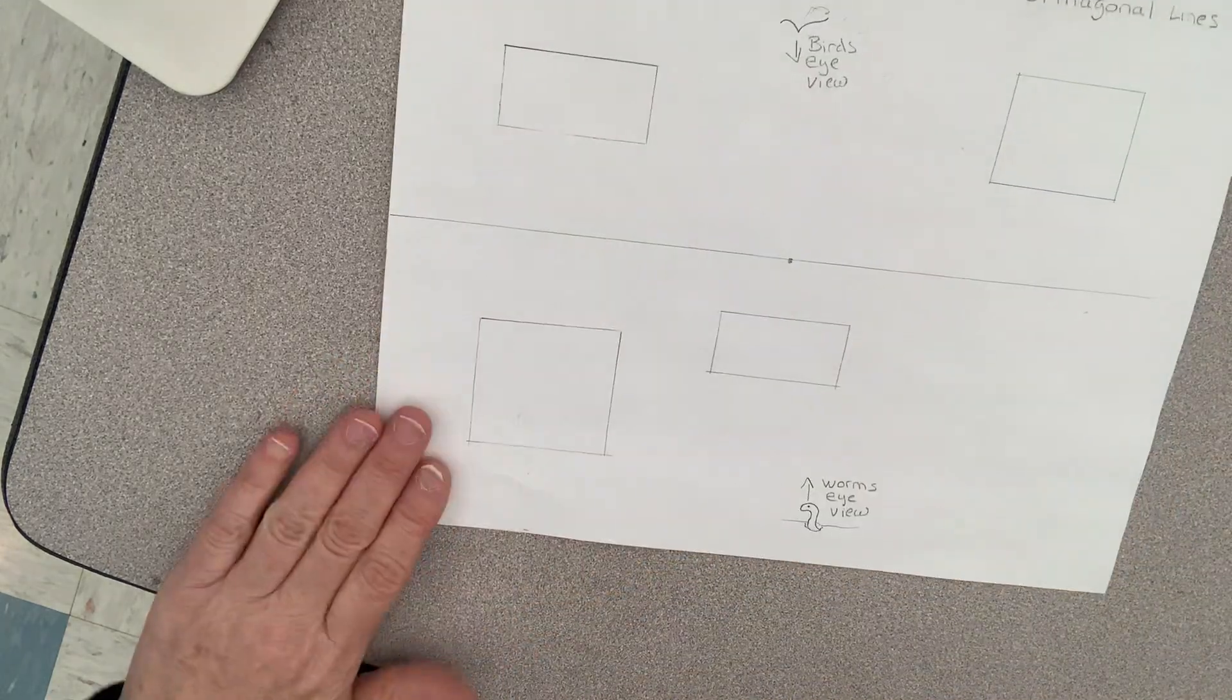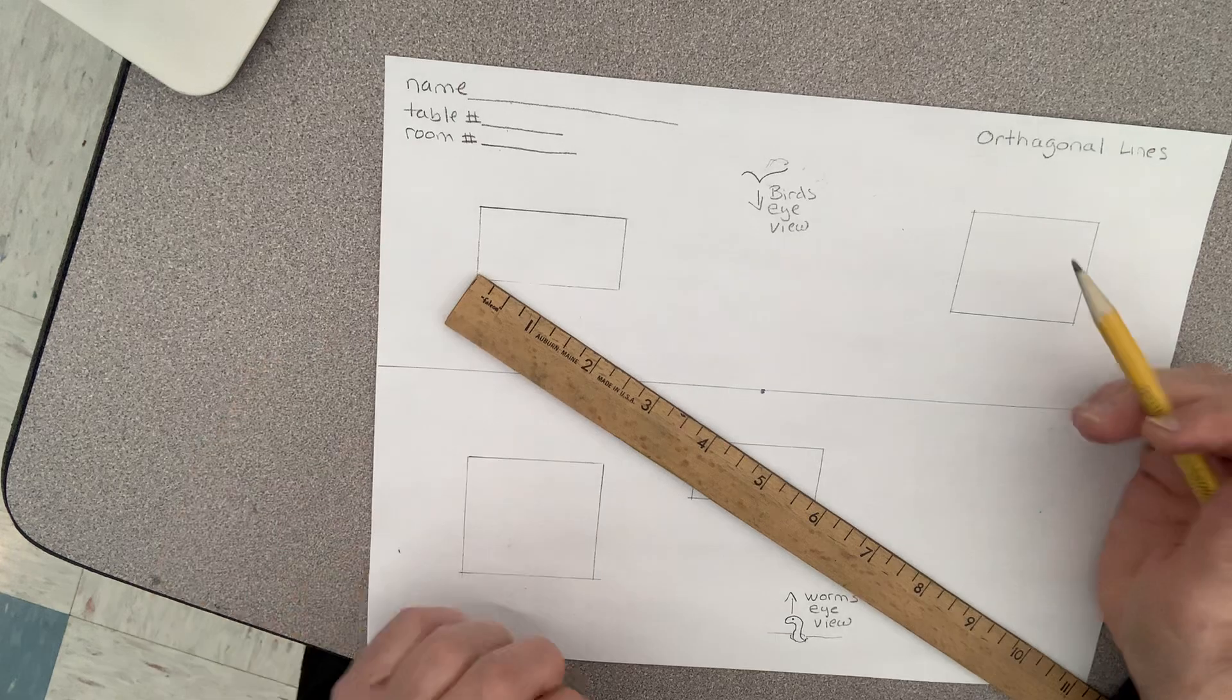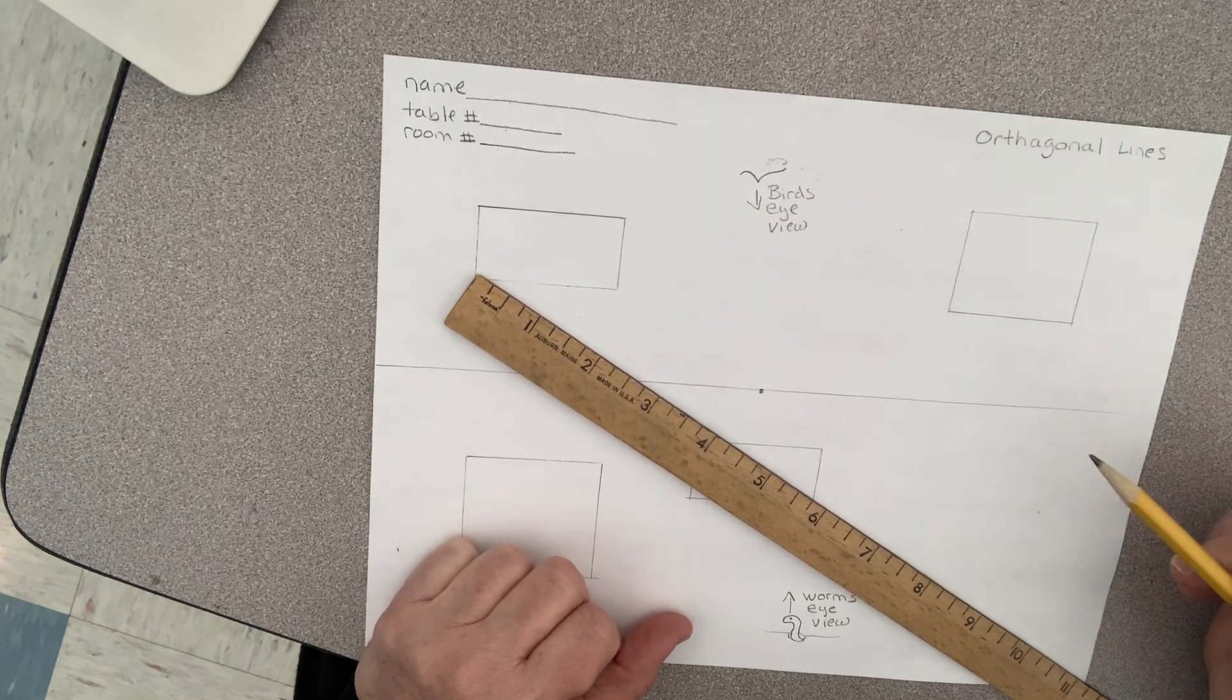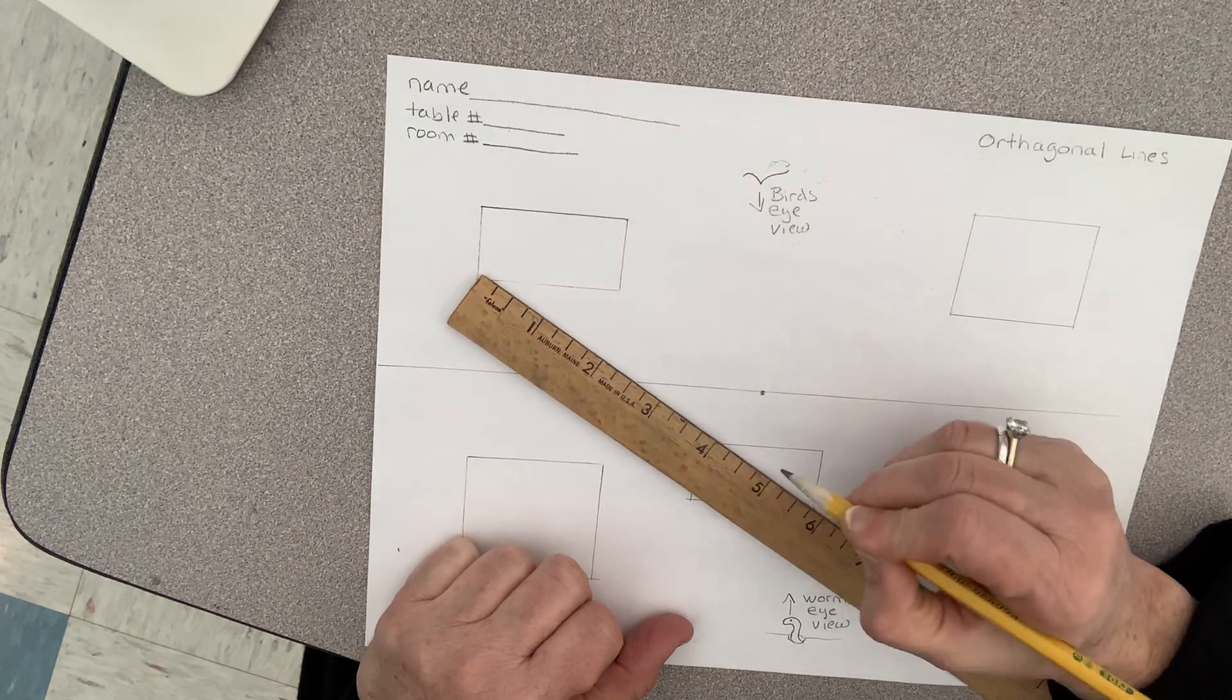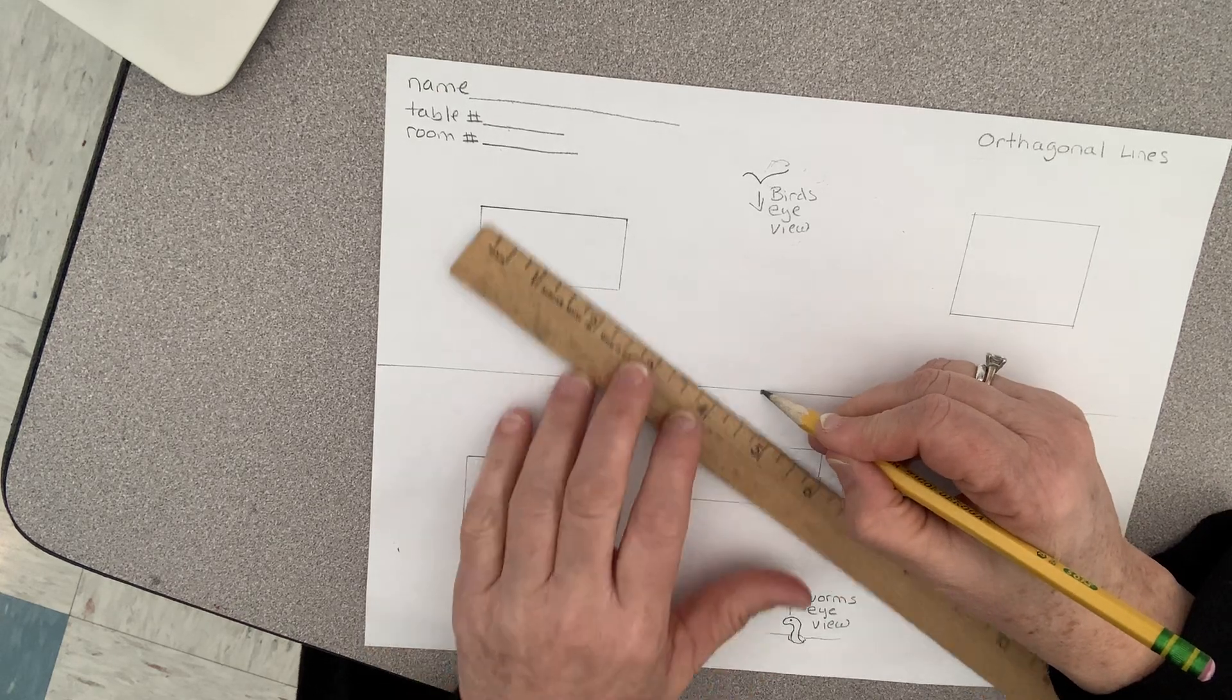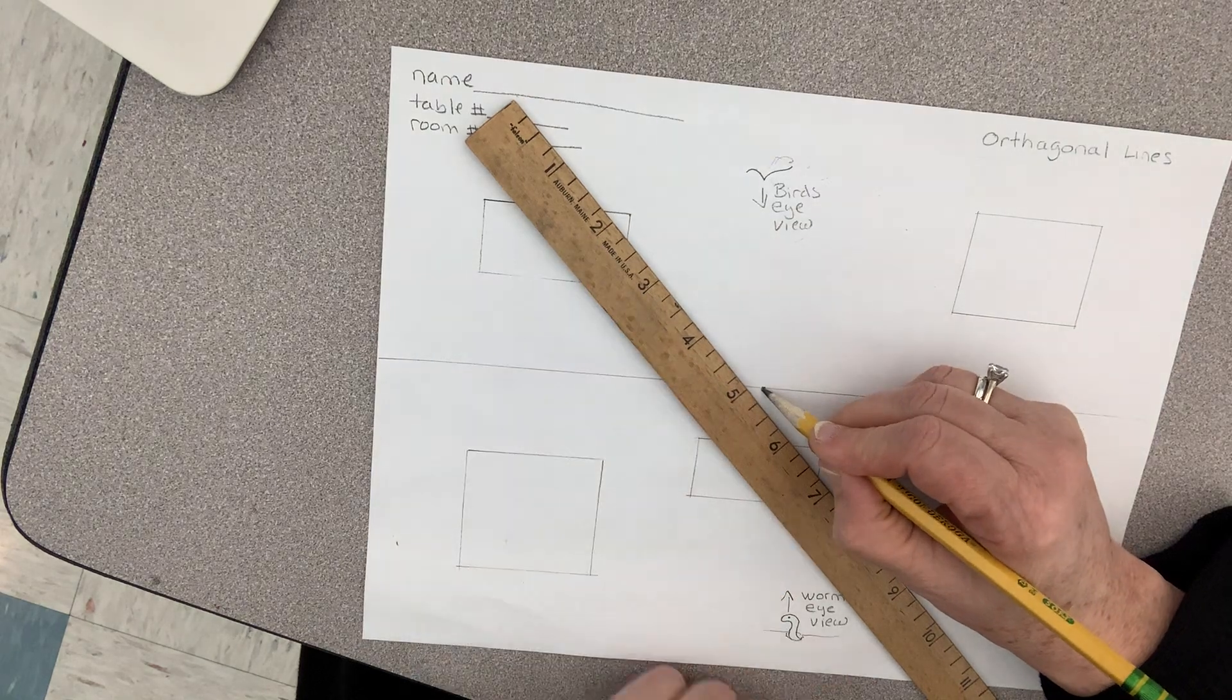Here we go, get out your paper and we are gonna make some orthogonal lines. We're gonna start with this box up here where it says bird's eye view, and we're gonna start with this corner of this box. We're gonna connect this corner to here.